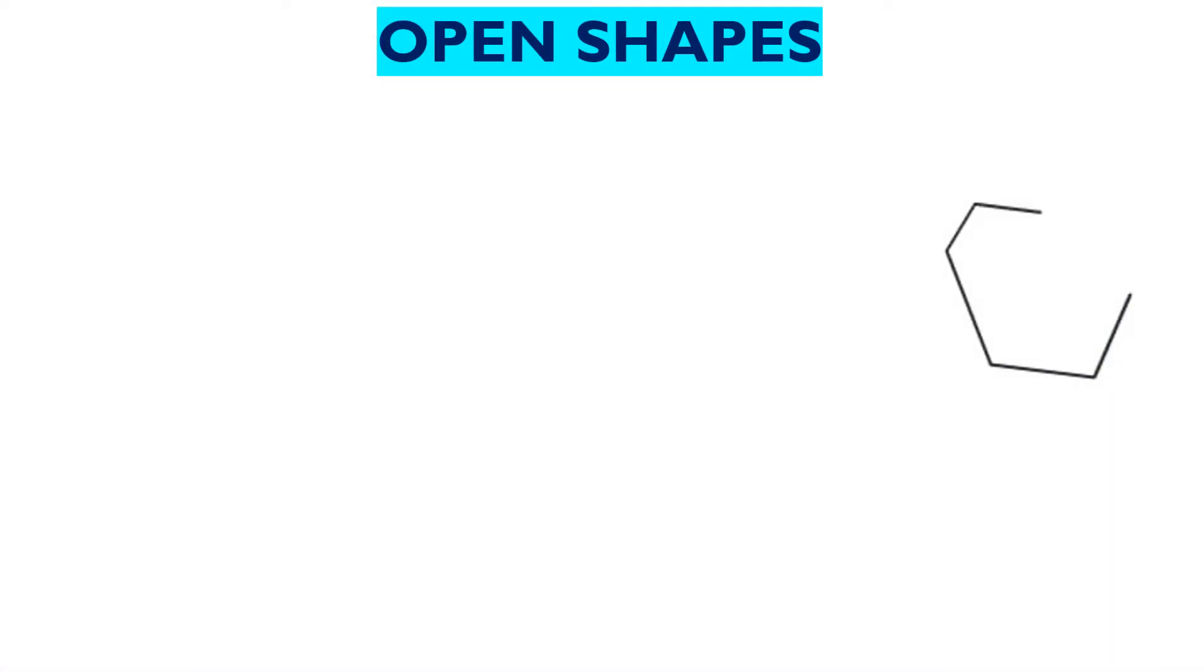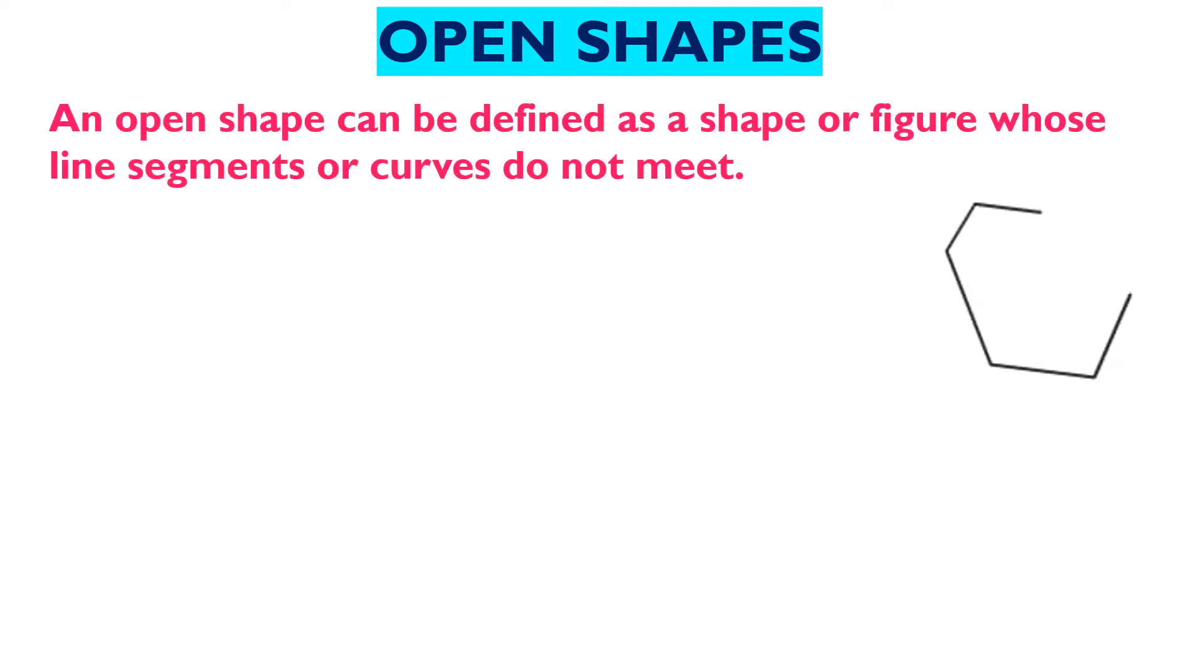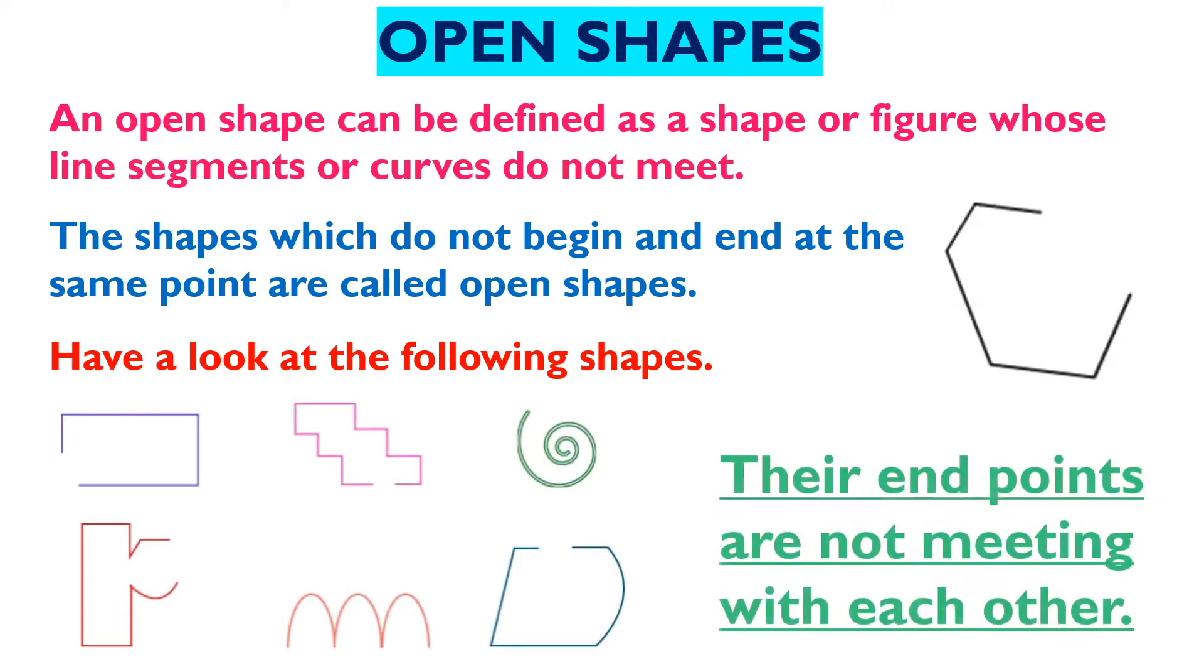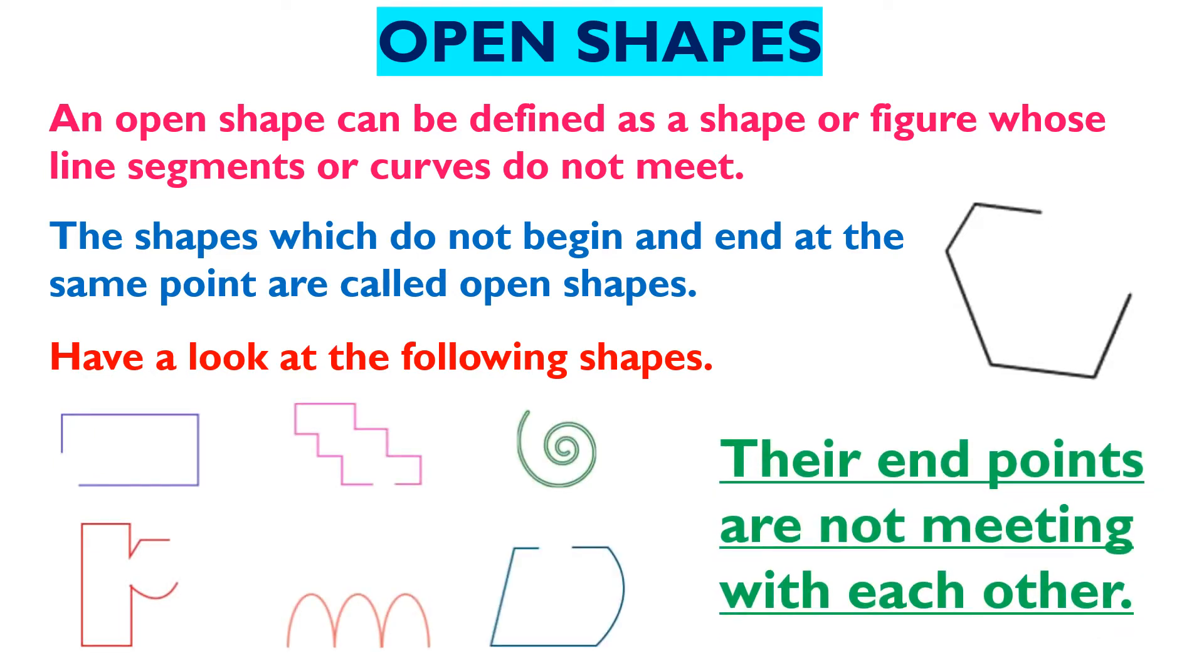Now let us first know about the open shapes. What are open shapes? An open shape can be defined as a shape or figure whose line segments or curves do not meet. The shapes which do not begin and end at the same point are called open shapes. Have a look at the following shapes. Their endpoints are not meeting with each other. So, all these shapes are known as open shapes.